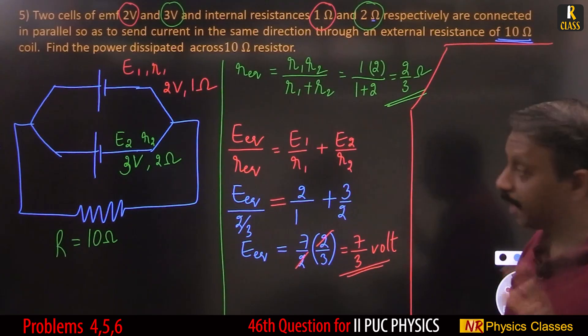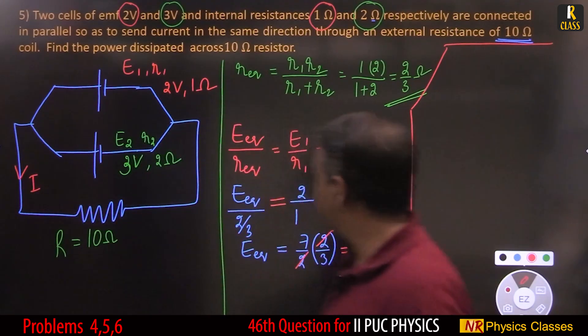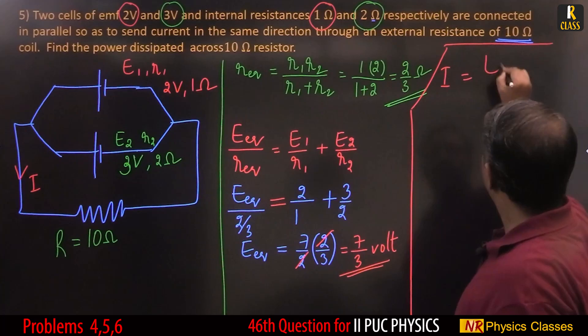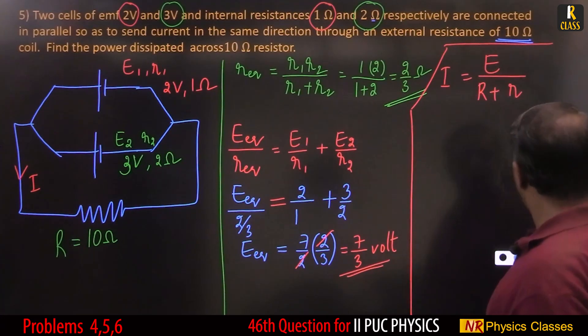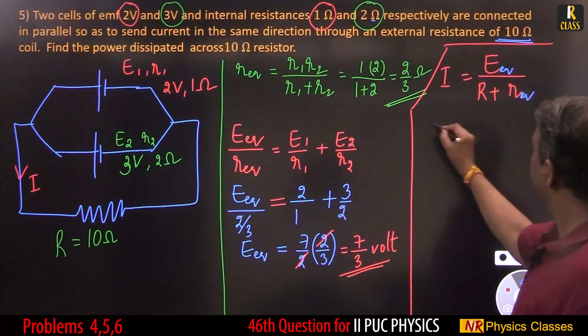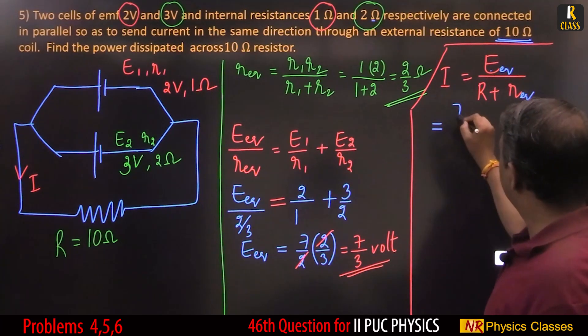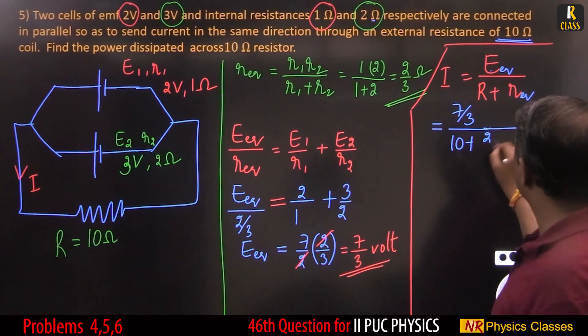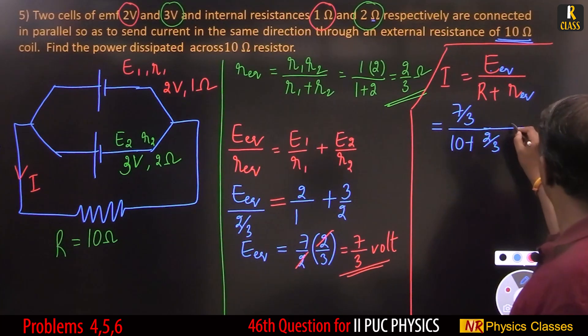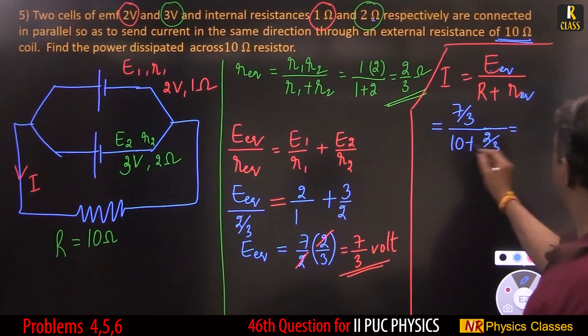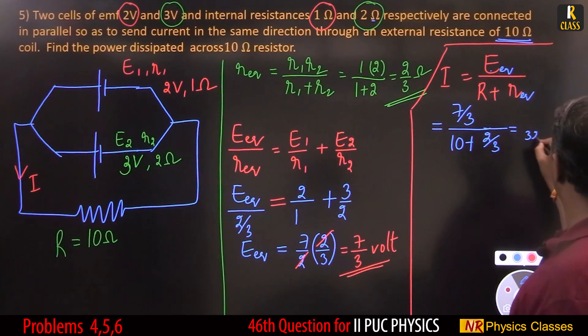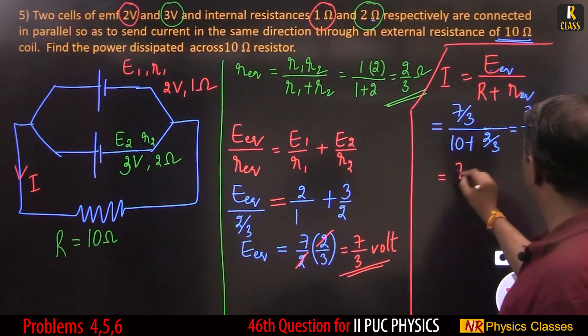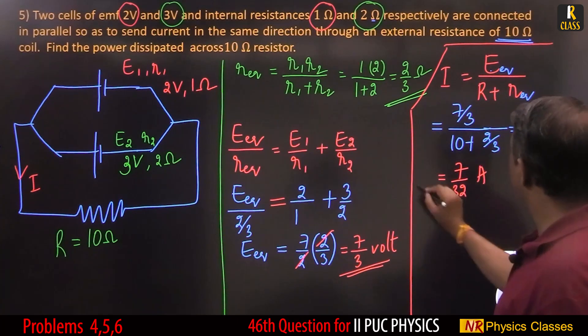Let us find current through the circuit. Current I equals EMF by R plus r. In this case there are 2 cells, so equivalent EMF is 7 by 3, external is 10 plus internal is 2 by 3. That's 32 by 3. So current is 7 by 3 divided by 32 by 3, equals 7 by 32 ampere.